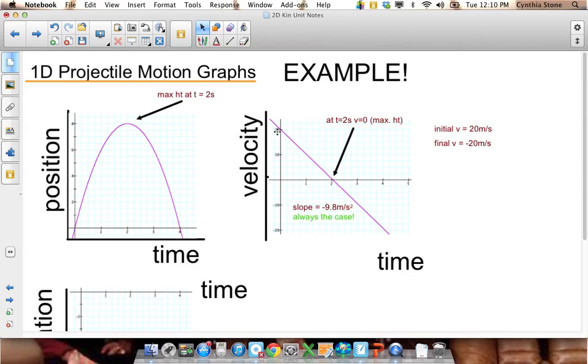Like, say you're launching something from your hand, leaves your hand at 20 meters per second, you catch it again at 20 meters per second, but it's in the south direction. And at t equals two seconds, you have a velocity of zero. The slope is constant because slope of a velocity time graph, you may remember, is acceleration. So the slope will be 9.8 the whole time.